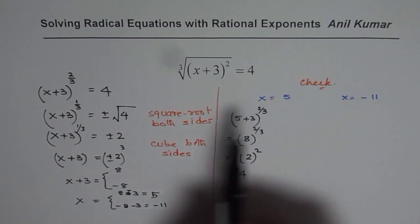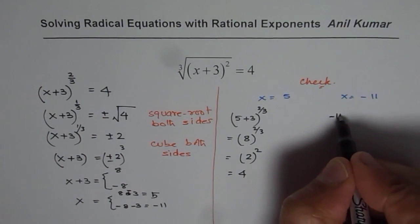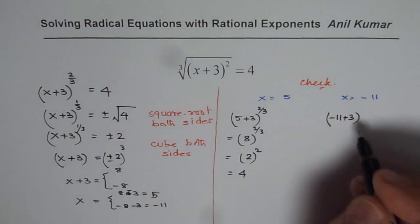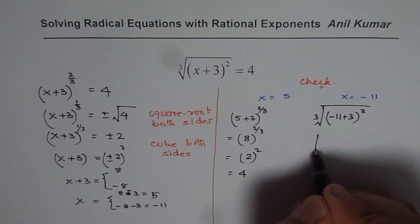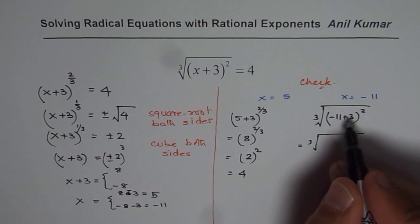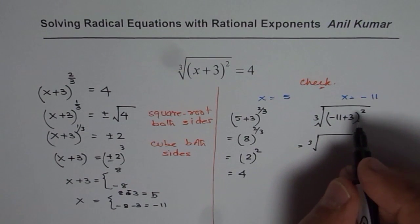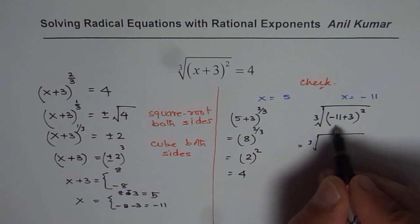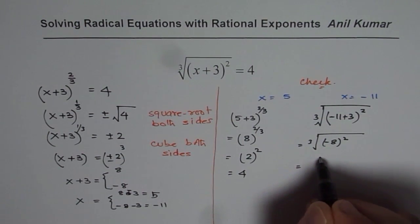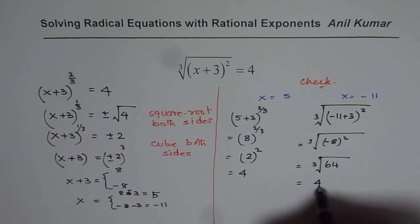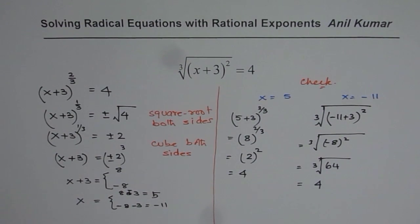Let us substitute minus 11 here now. So we have minus 11 plus 3 to the power of, let me write it as cube root and whole square. So we have cube root of minus 11 plus 3, which is minus 8, whole square. That gives you negative 8 whole square. Negative 8 whole square is 64. 64 cube root is indeed 4. So in both the cases, we get the same answer, 4.